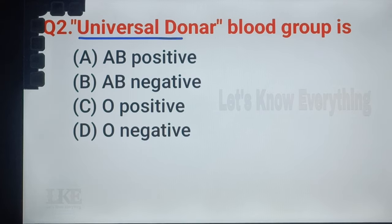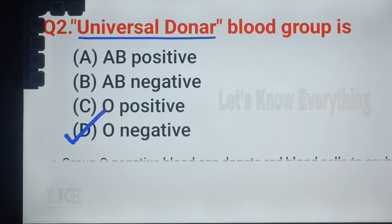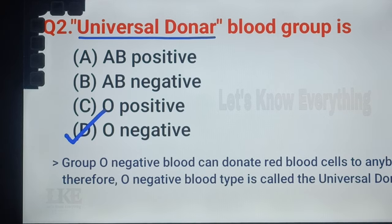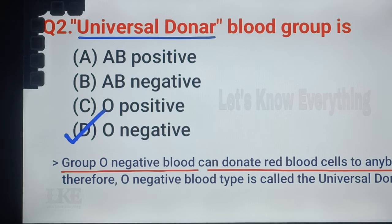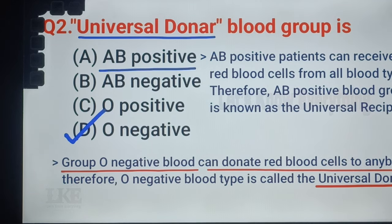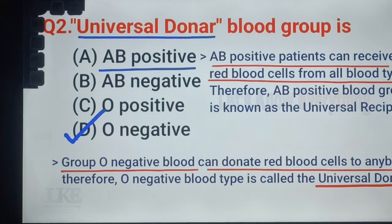Question number 2: Universal donor blood group is O-. Group O- blood can donate red blood cells to anybody. Therefore, O- blood type is called the universal donor. Remember, every positive patient can receive red blood cells from all blood types. Therefore, every positive blood group is also known as the universal recipient.